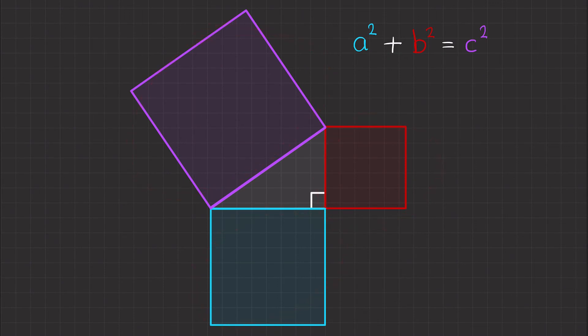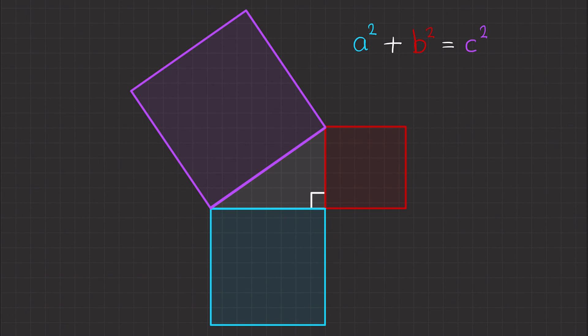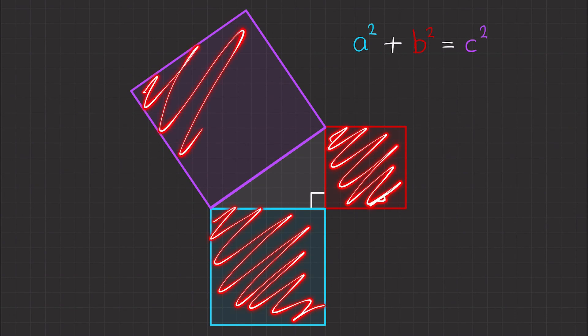Now what Pythagoras figured out is if you add the area of A squared to the area of B squared, it's the same as this area of the area C squared. So A squared plus B squared equals C squared.